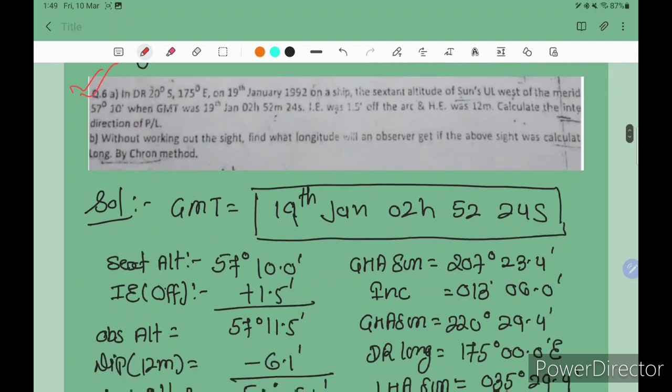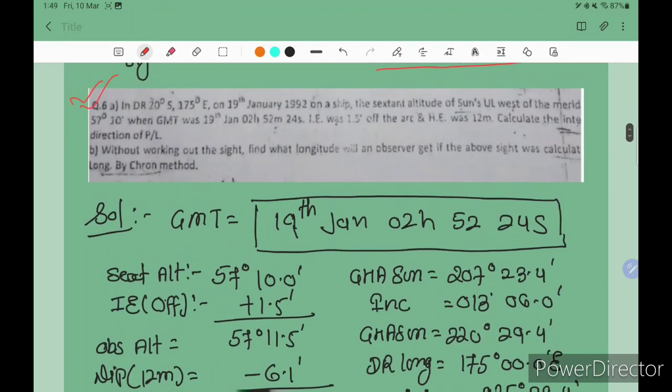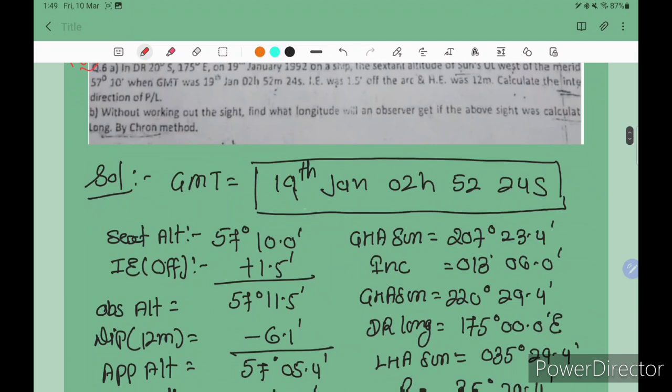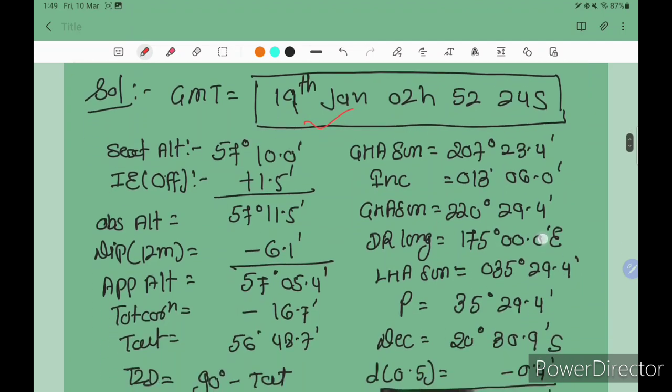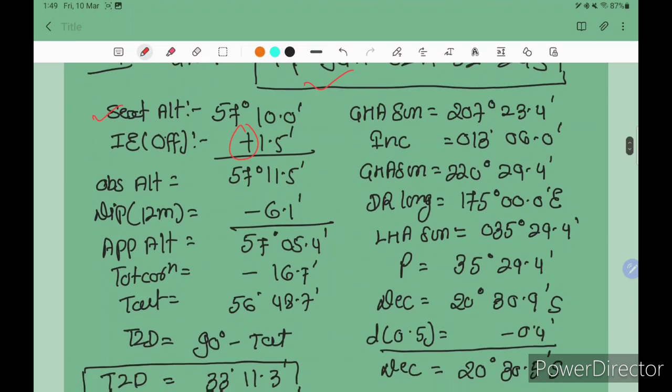First, we write down the GMT: 19 Jan 02 hours 52 minutes 24 seconds. We calculate the sextant altitude: 57 degrees 10.0 minutes. Index error is off, so plus 1.5, giving us 57 degrees 11.5 minutes observed altitude. For dip at 12 meters height, using Nautical Almanac 1992, we get minus 6.1, giving apparent altitude 57 degrees 05.4 minutes.